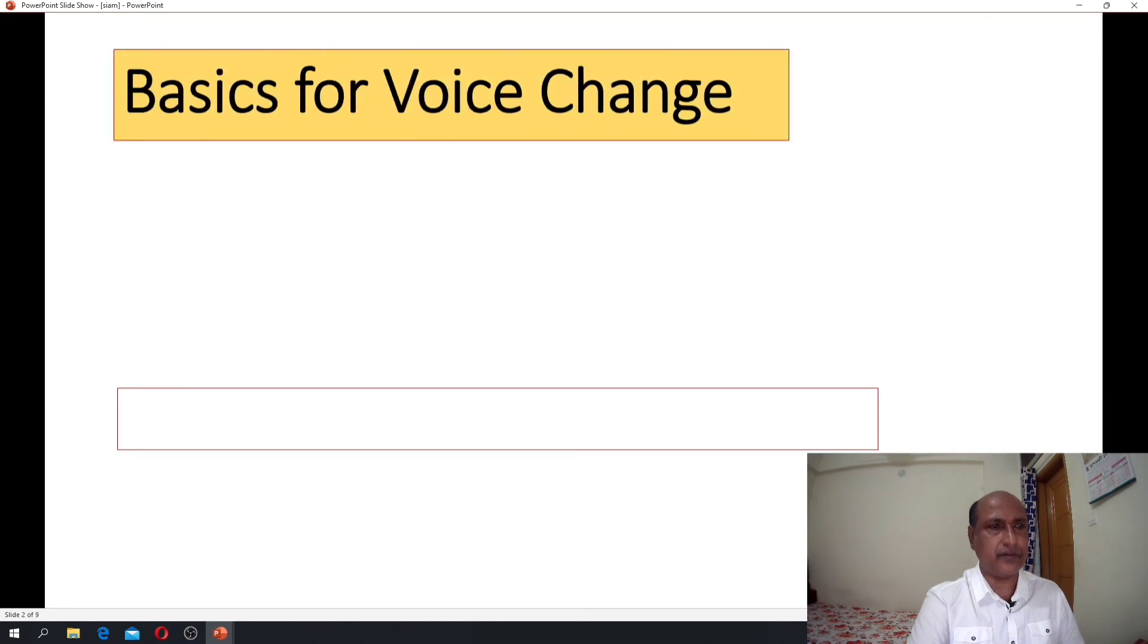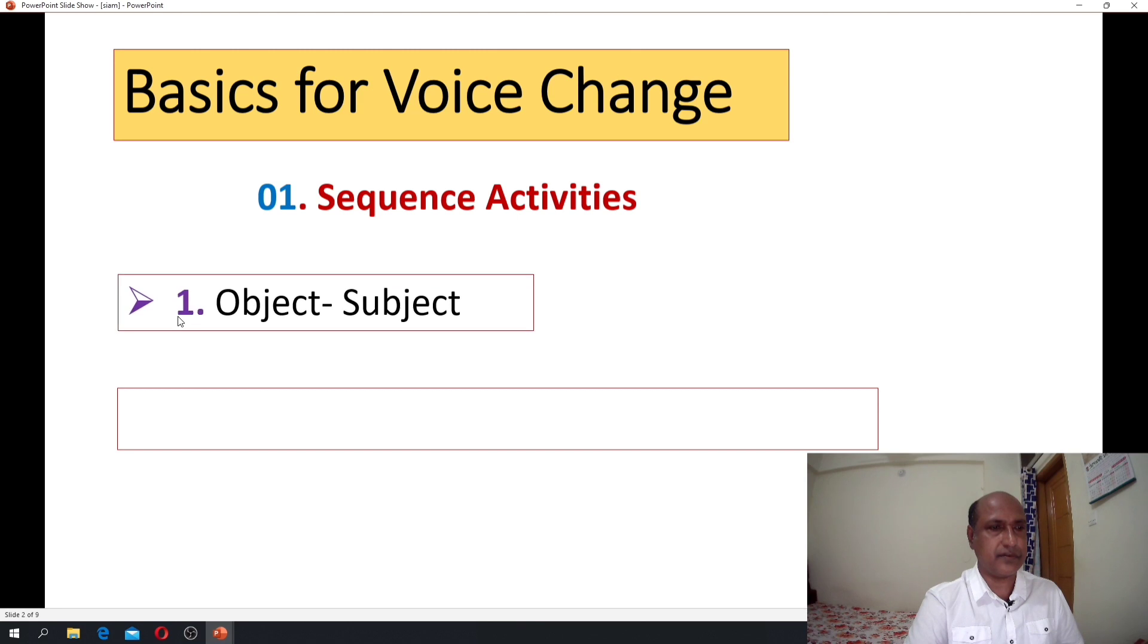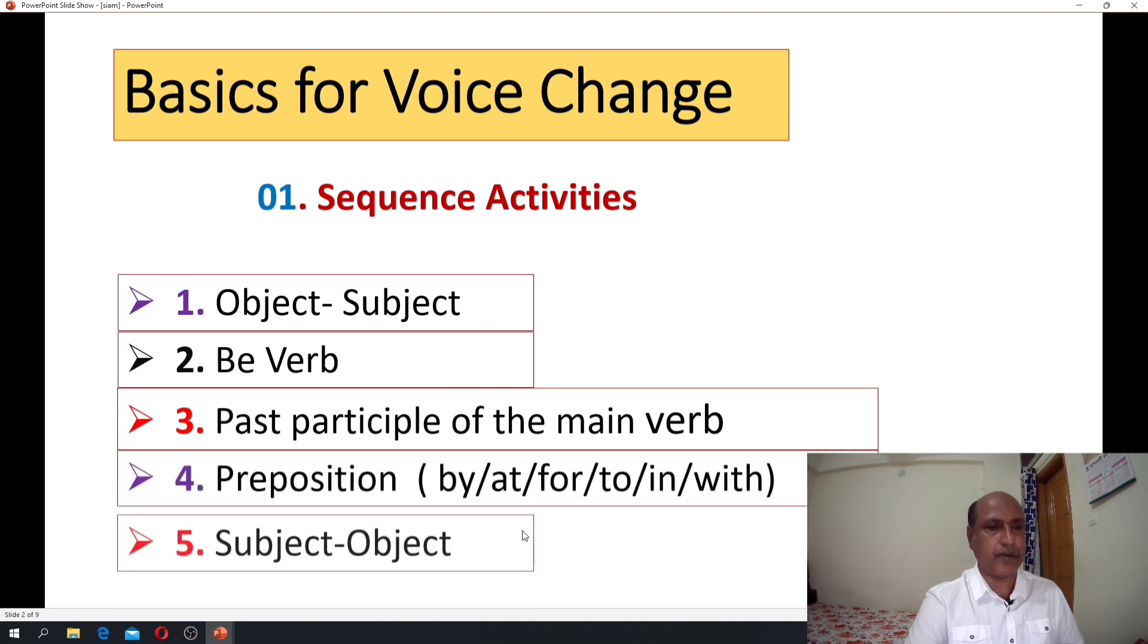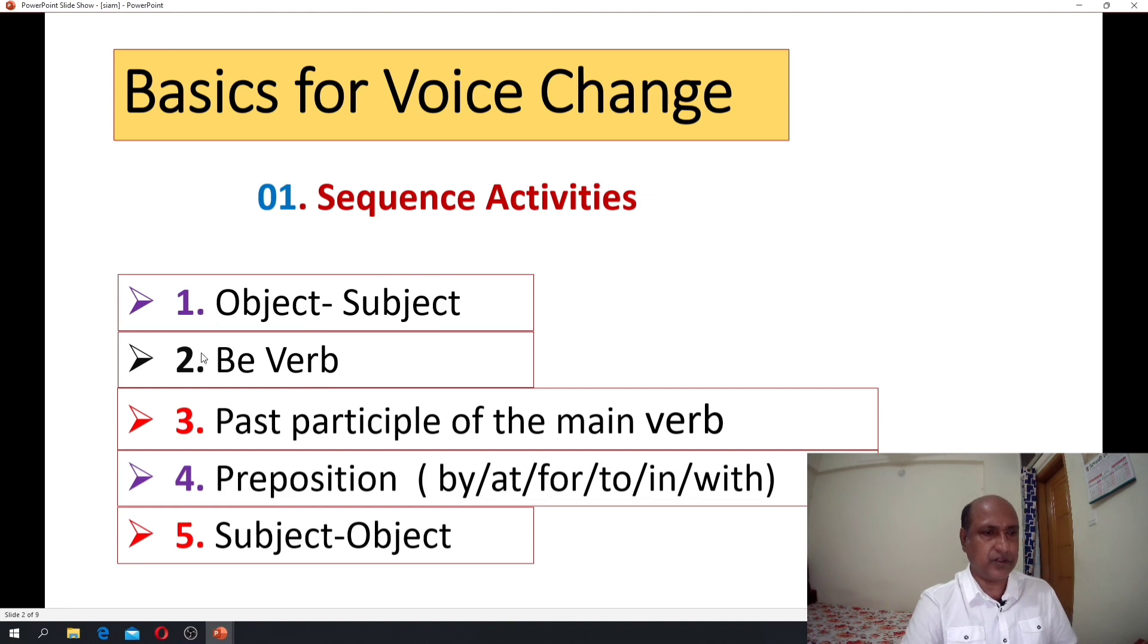We have to follow the basics. Let us follow the basics for voice change. The sequence activities are number one: object-subject, number two: be verb, number three: past participle of the main verb, number four: preposition, number five: subject-object.